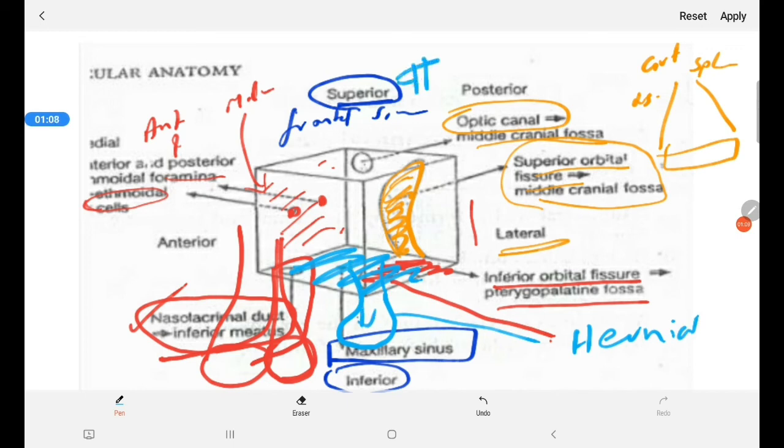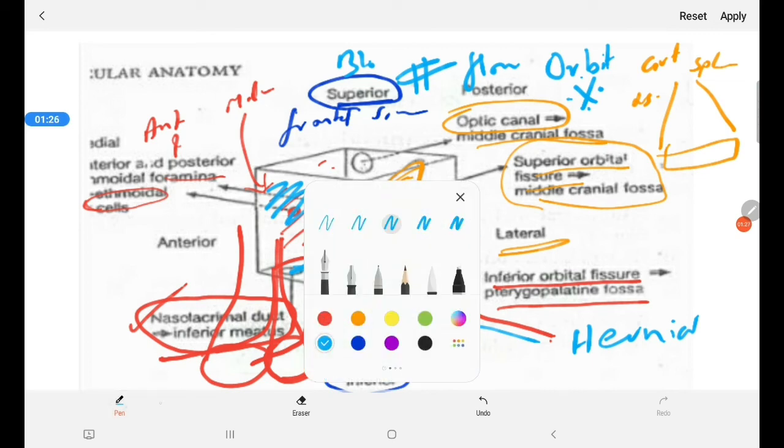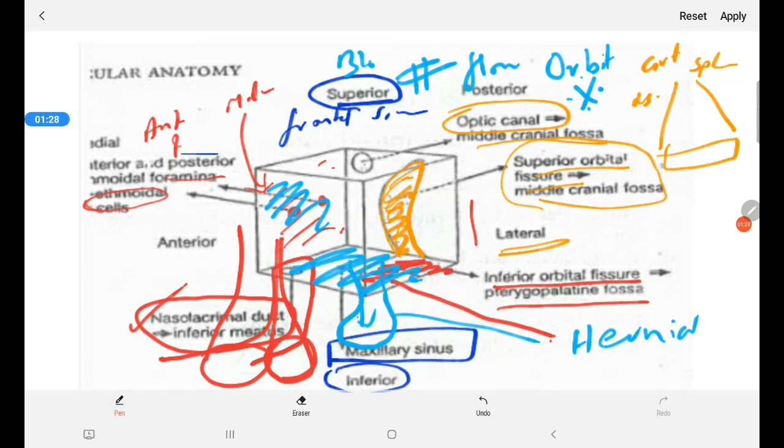Orbital fracture or blowout fracture of the floor of the orbit is very important clinically and it is an emergency to deal with. Another important thing is, the medial wall is related to the ethmoid sinus through a very thin lamina papyracea.